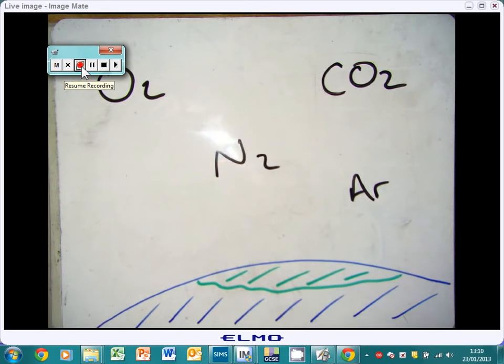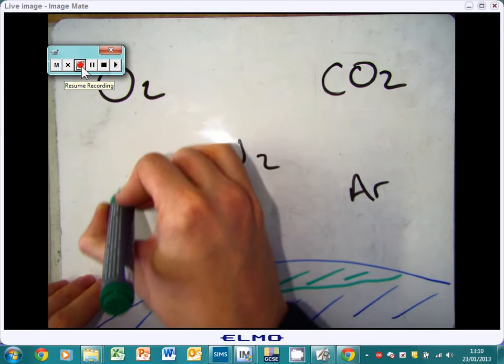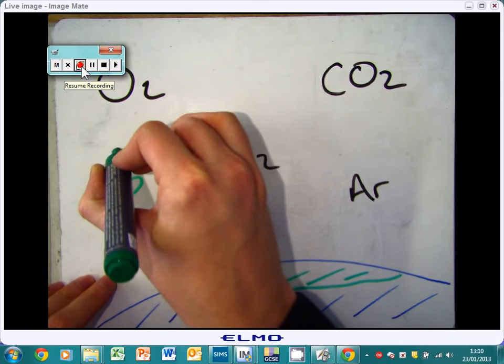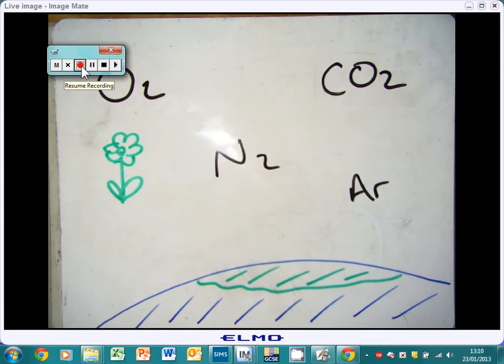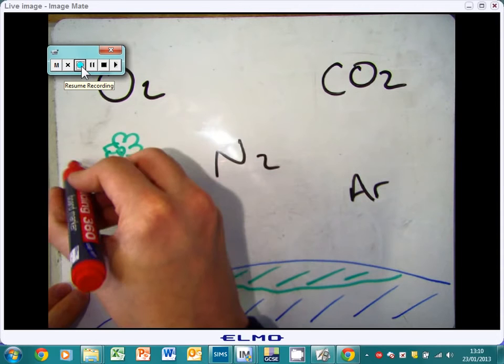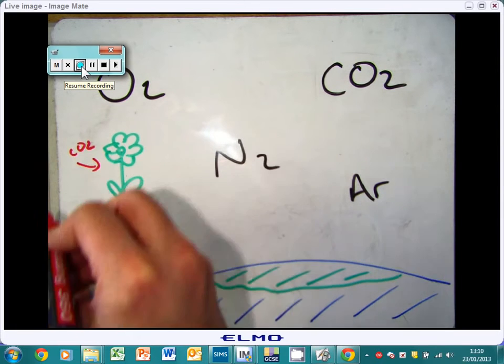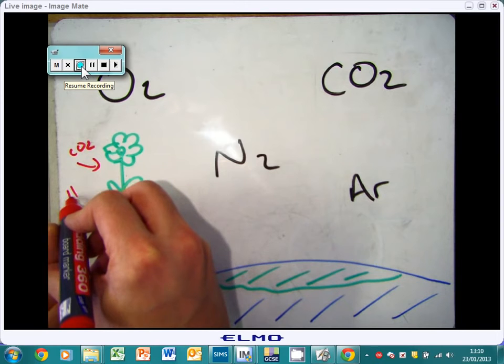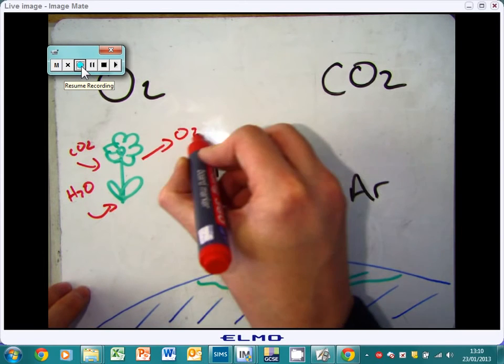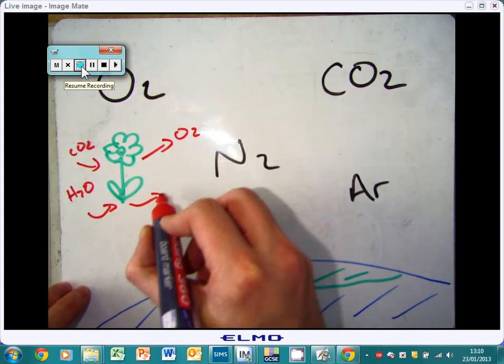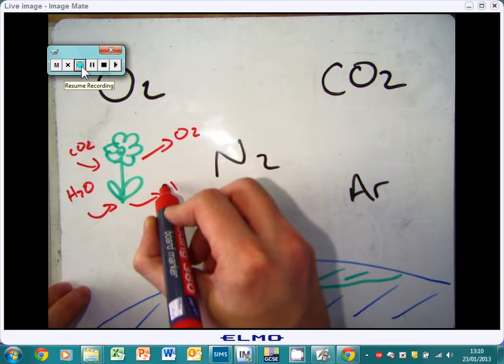Oxygen, which wasn't around in the first place, was produced when plants photosynthesized. They took in carbon dioxide and water, and they gave out oxygen, water, and glucose.